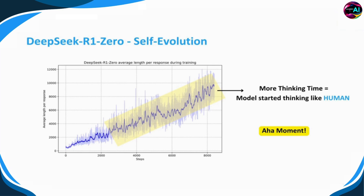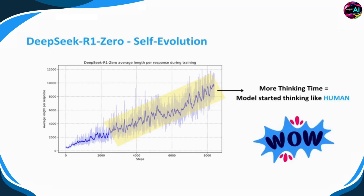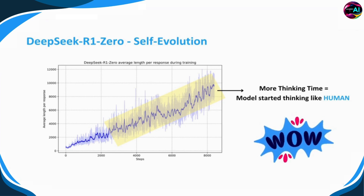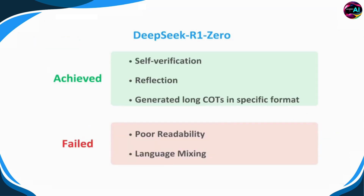An interesting phenomenon during R1-Zero's training is the 'aha moment.' As the model evolves, it begins allocating more time to re-evaluate its initial approach and find better solutions. It's amazing to watch an AI model learn to think and reason like humans, slowly improving its problem-solving approach over time. This chart represents the next generation of AI, where more thinking time equals more human-like reasoning. So R1-Zero demonstrated self-verification, reflection on its own learning, and generating a chain of thoughts in a specific format. However, it struggled with poor readability and language mixing — while it was acquiring more knowledge, it was not optimized to present that knowledge effectively to the user.